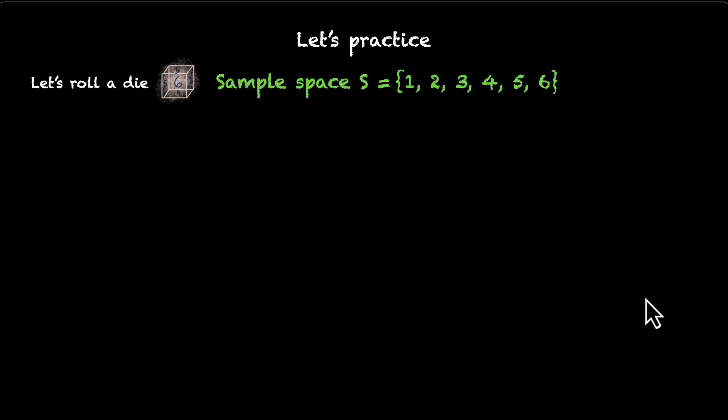All right. Now, let's practice whatever we have learned. So, let's roll a die, and this is the sample space that we get: 1, 2, 3, 4, 5, 6. Six sample points. I'm going to put down a list of events, and you're going to tell me what the complement of those events are.